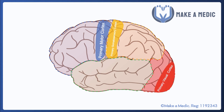Then we have our primary visual cortex, which is located right at the back of our brain in the occipital lobe. However, one slight complication with the visual pathway is that it actually goes through a couple of other lobes as well. We get the information coming in from our eyes, it goes towards the lateral geniculate nucleus — the little red blob there — and from there we have optic radiations which go via the temporal and parietal lobes towards the primary visual cortex.